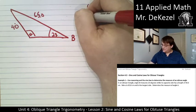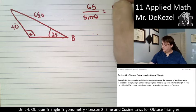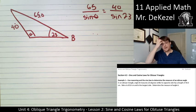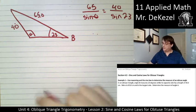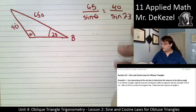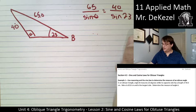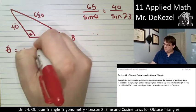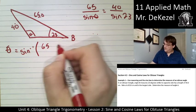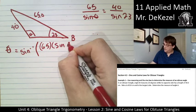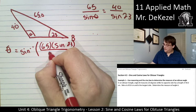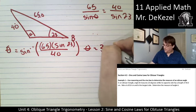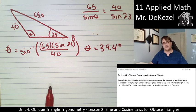So 65 over the sine of theta is equal to 40 over the sine of 23. So I have skipped writing out the formula, but you always should write out the formula first. We're going to rearrange. The 40 comes down. The sine of 23 comes up. And the sine of theta goes up here. And of course, we inverse. So theta is going to be equal to the sine inverse of 65 times the sine of 23 divided by 40. And what we get here, we find theta to equal 39.4 degrees.